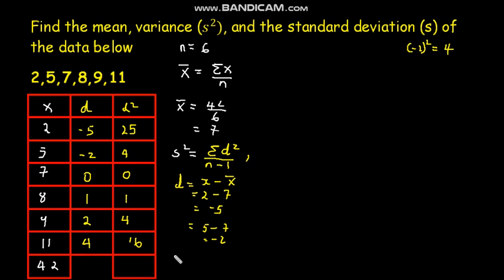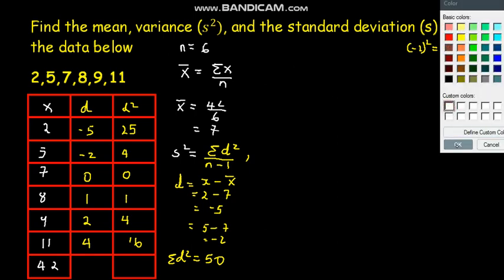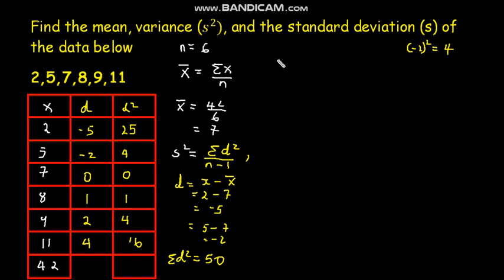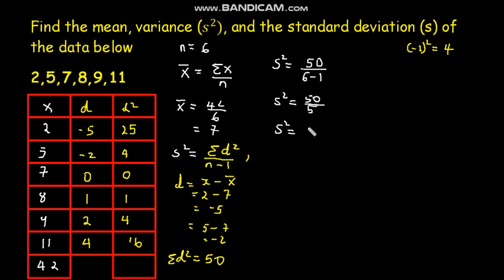The sum of the squared deviations is equal to 50. To calculate the sample variance, s² equals 50 divided by the number of samples minus 1, which is 6 minus 1 equals 5. Therefore s² equals 50 divided by 5, and our sample variance is 10.